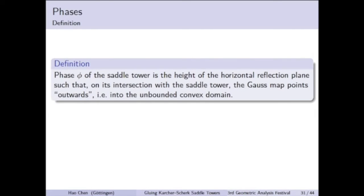We now give a better definition for the notion of phase. We have mentioned that this notion of phase is the key notion to remove the horizontal reflection planes. Basically, the phase of a saddle tower is a value between 0 and 2π that indicates the height of one horizontal reflection plane of the saddle tower.